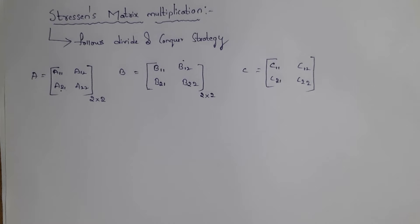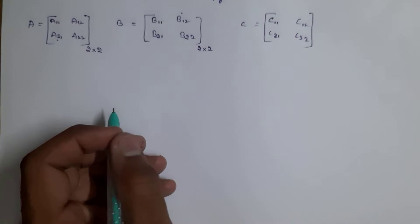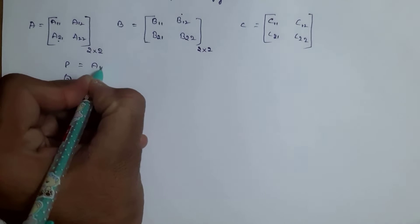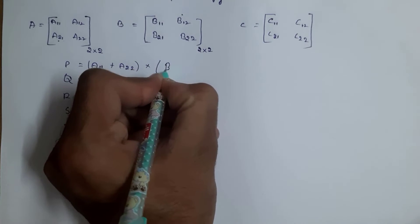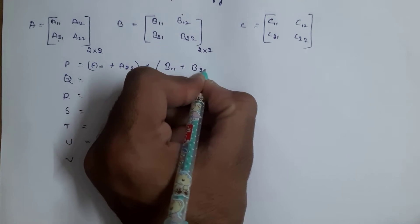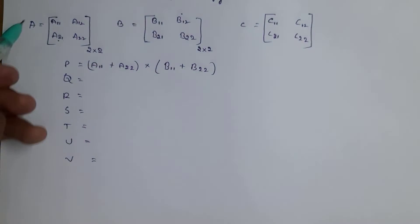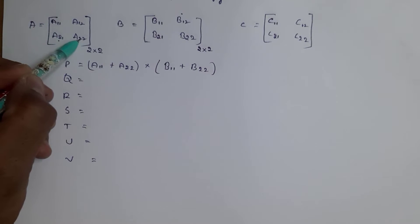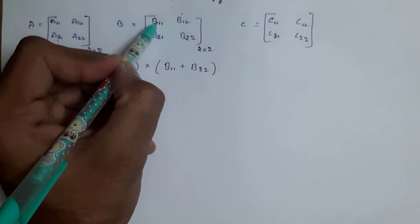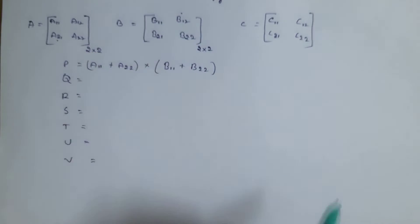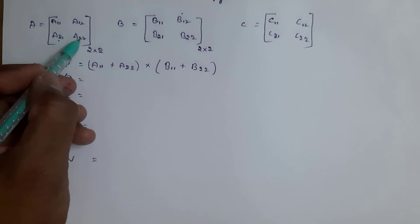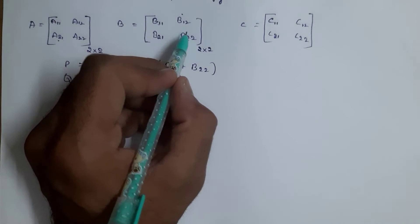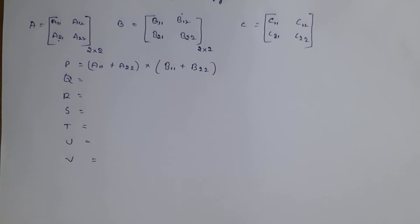We need to follow some formulas. The formula of P is: (a11 + a22) × (b11 + b22). We need to add the diagonal elements — that is a11 plus a22 — and similarly in B, b11 plus b22. This is the formula of P.